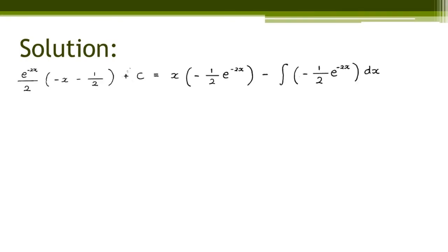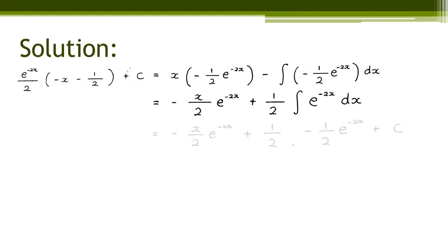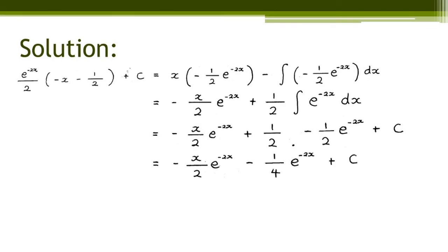Now we do the integration by parts again: x multiplied with negative 1 over 2 e to the power of negative 2x, minus the integral of negative 1 over 2 e to the power of negative 2x dx. We calculate that, giving us negative x over 2 e to the power of negative 2x plus 1 over 2 times the integral of e to the power of negative 2x dx. Continuing on, we get negative x over 2 e to the power of negative 2x plus 1 over 2 multiplied with negative 1 over 2 e to the power of negative 2x plus c. Multiplying the constants gives us negative x over 2 e to the power of negative 2x minus 1 over 4 e to the power of negative 2x plus c. Factorizing the equation gives us e to the power of negative 2x over 2, multiplied with negative x minus 1 over 2, plus c.